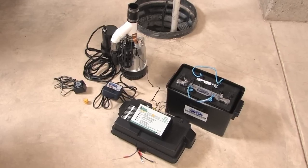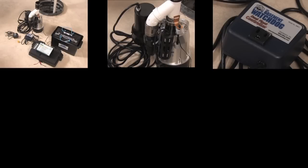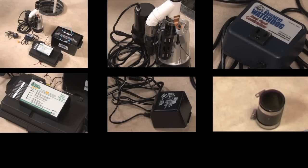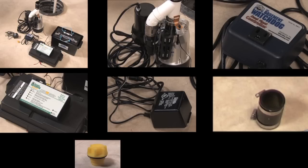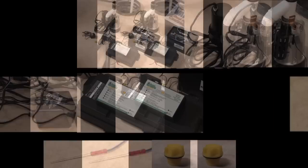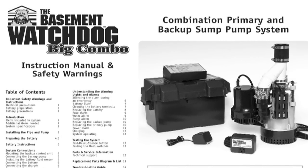Lay out the parts included in the basement watchdog combination system: the pump assembly, the AC pump controller, the backup pump controller, the charger, a rubber union, and the yellow battery cap. That cap has a hole to accommodate the battery fluid sensor. Before you begin, read the warnings and instructions in the enclosed manual.